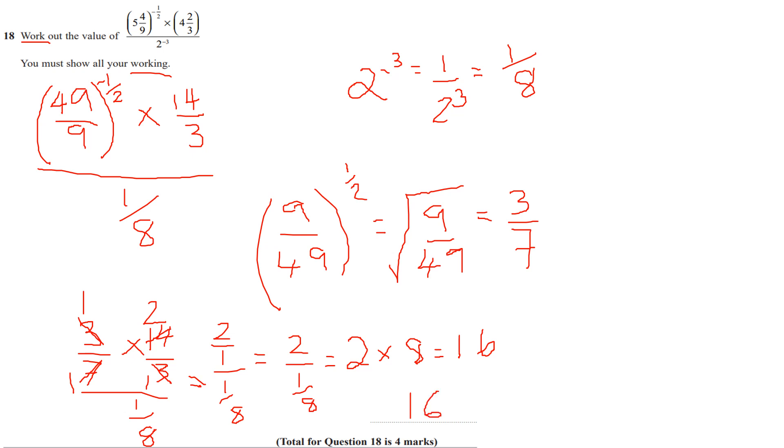That was quite a tricky and nasty higher tier index problem. There was a lot going on there. The negative power does the reciprocal, power of half means the square root, power of minus 3 means 1 over 2 cubed, or 1 over that number cubed. And that's how we get our answer.